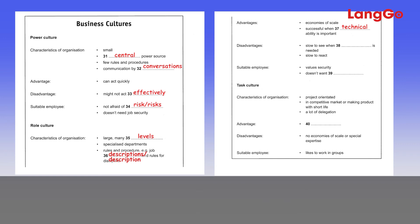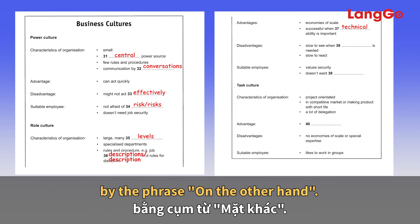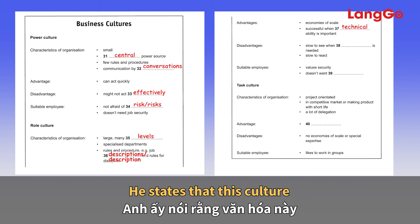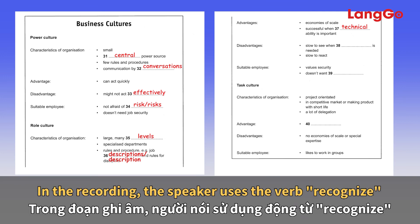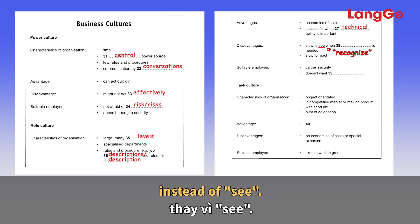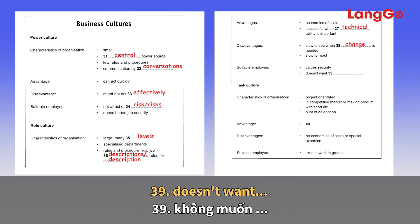Question 38 — slow to see when something is needed. The speaker says: on the other hand, this culture is often very slow to recognize the need for change and even slower to react. The signal 'on the other hand' introduces an opposing idea. The speaker uses 'recognize' instead of 'see', and the answer is 'change'.